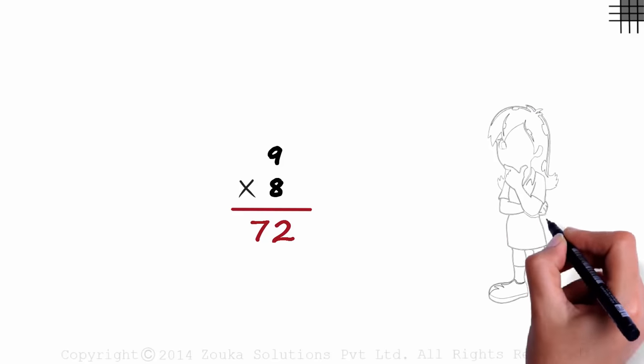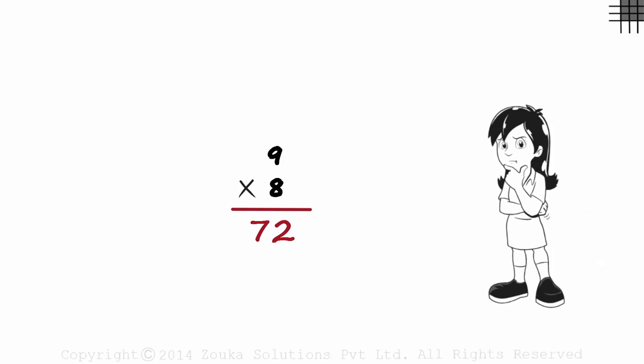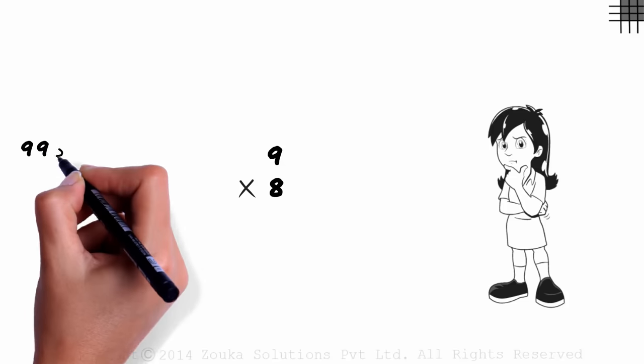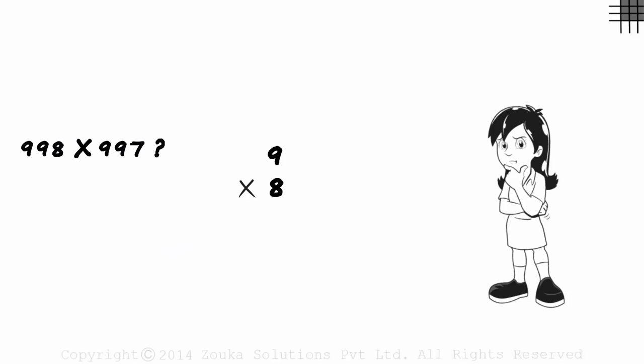Will this different way help us? Well, let me put it this way. Understanding this technique will help us solve problems like 998 times 997 in about 5 seconds. Yes, without a calculator. You don't believe me do you? Give me around 2 minutes to change your opinion.